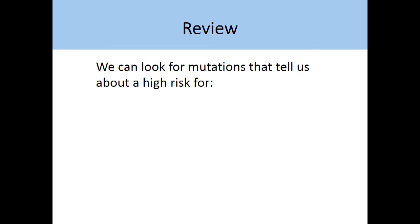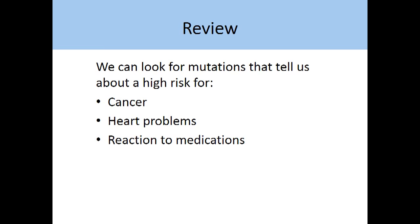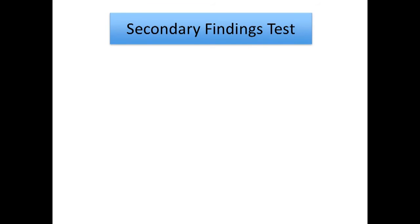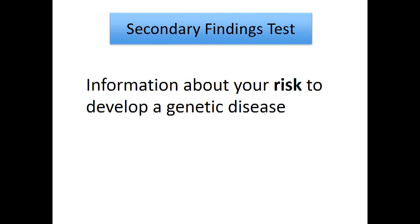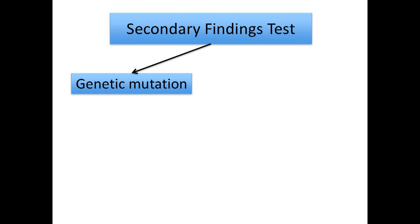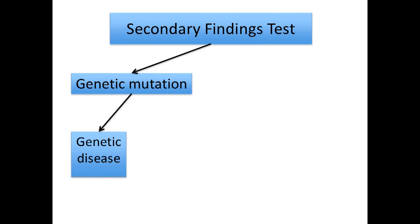Let's review what we have just talked about. We can look for mutations that tell us about a high risk for cancer, heart problems, or reactions to medications. If you decide to ask us to look for secondary findings in these 57 genes, the results will tell you only about your risk for these specific genetic diseases. The results will not tell you if you definitely will or definitely will not develop the disease, when it might develop, or how severe it might be. For instance, if we detect a genetic mutation, this means that you are at an increased risk of developing the genetic disease. However, though your risk for developing the disease is higher than someone without the genetic mutation, it is still possible that you will never develop the disease.